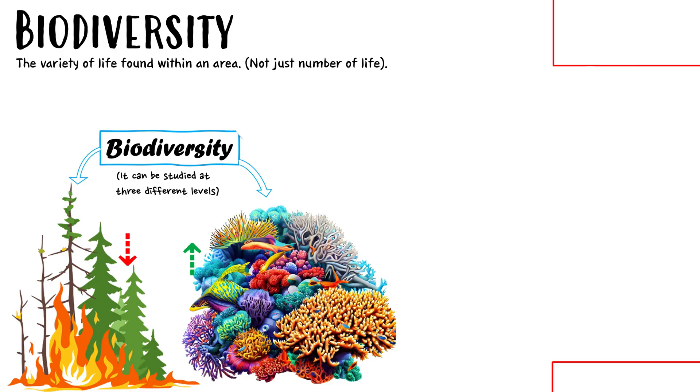Now, it's very important we understand first what biodiversity means. So we have an earth that is so biodiverse. What does that mean? Bio means living things. Diversity just means the word diversity, meaning a wide variety of. So we have such a wide variety of life on our planet now. So many different organisms. So really, what is biodiversity? It's the variety of life found within an area, not just the number of life.